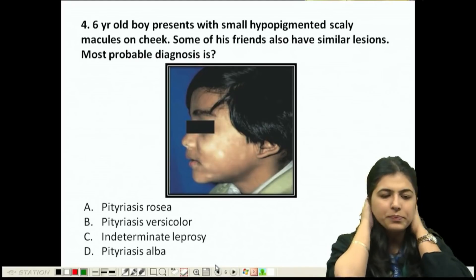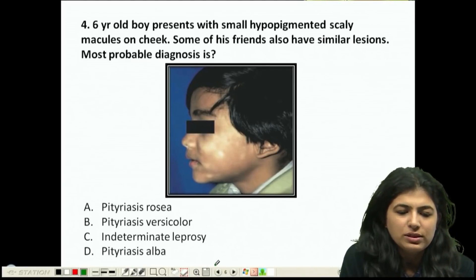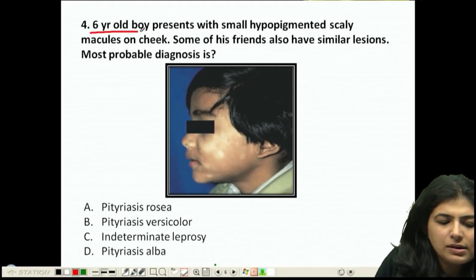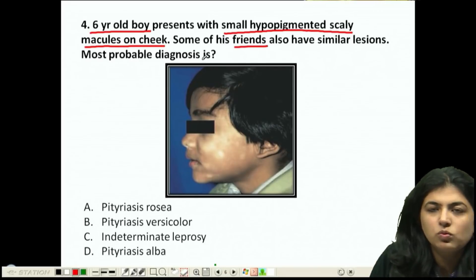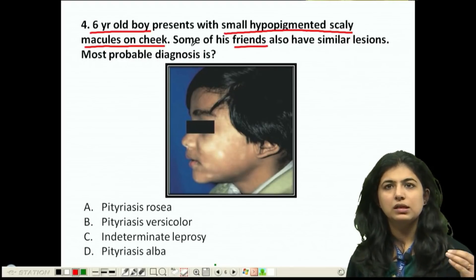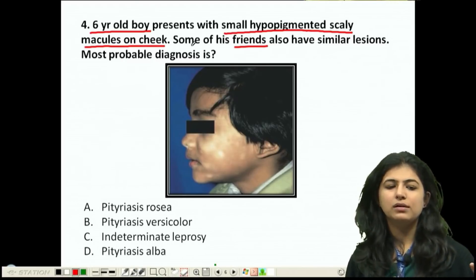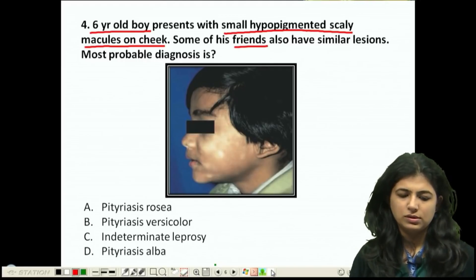Next question — what is the question telling us? Let's read it together. A small child presents with small hypopigmented scaly macules on the cheek. Friends also have similar lesions. What is the diagnosis? The question is telling us that it's a child who has scaly hypopigmented lesions on the cheeks — what is the diagnosis?